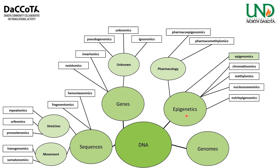Epigenetics is a very important subfield. Under a pharmacology subsection: pharmacoepigenomics (epigenomics and pharmacology) and pharmacomethylomics (methylomics and pharmacology). Epigenomics itself covers epigenetic modification of genetic material. Subsets include chromatinomics, methylomics (DNA methylation patterns), nucleosomics (nucleosome-based DNA packing in eukaryotes), and nutriepigenomics (nutrition and epigenomics).